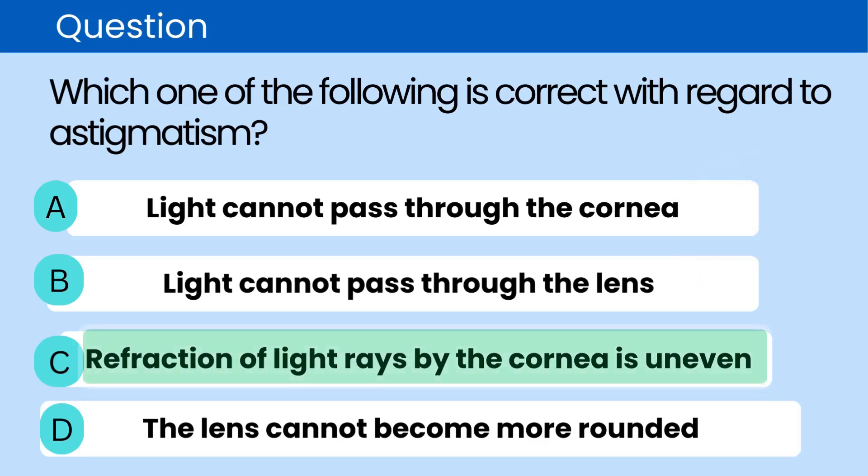The correct answer is C. Refraction of light rays by the cornea is uneven. Astigmatism occurs when the cornea's surface is irregularly shaped, causing light to refract unevenly and leading to blurred vision.